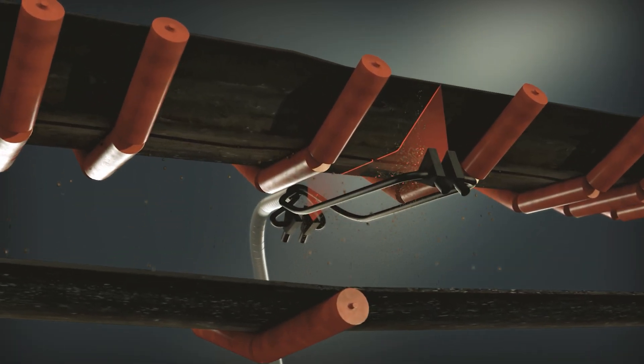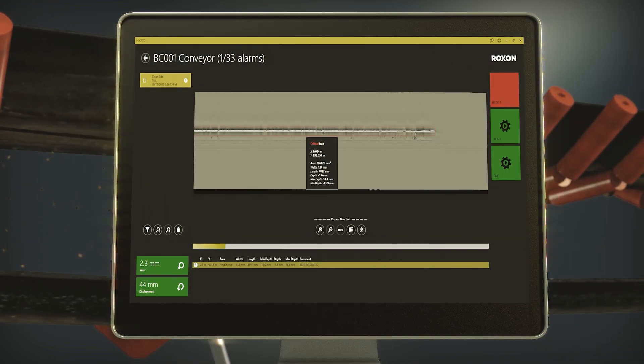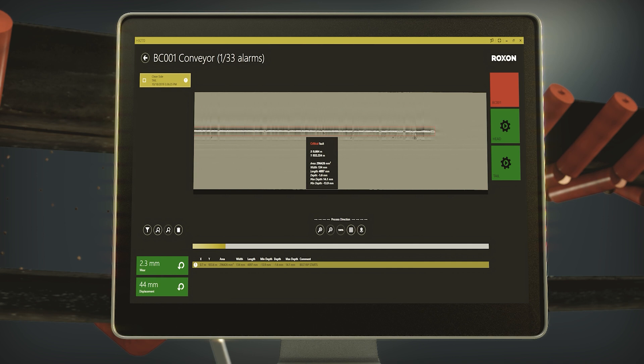When damage happens, the user is informed via an alarm through a convenient software interface. The display makes it easy to visualize the condition of the belt, which in most cases is impossible to see with the naked eye.